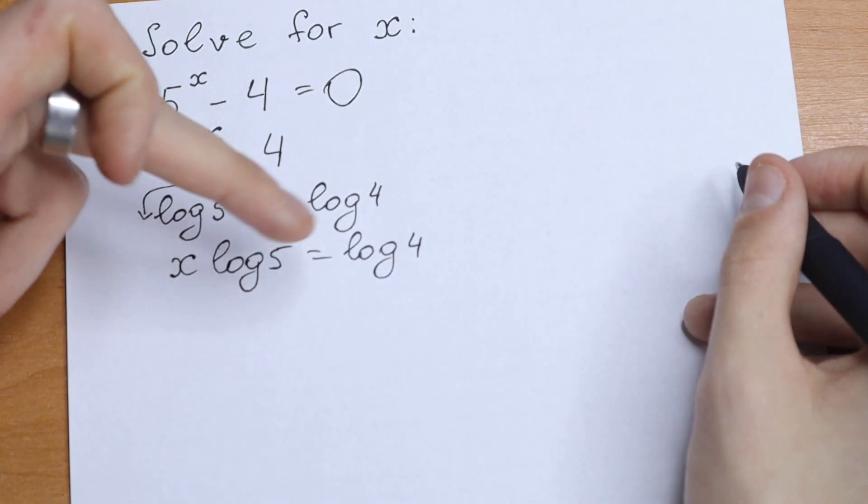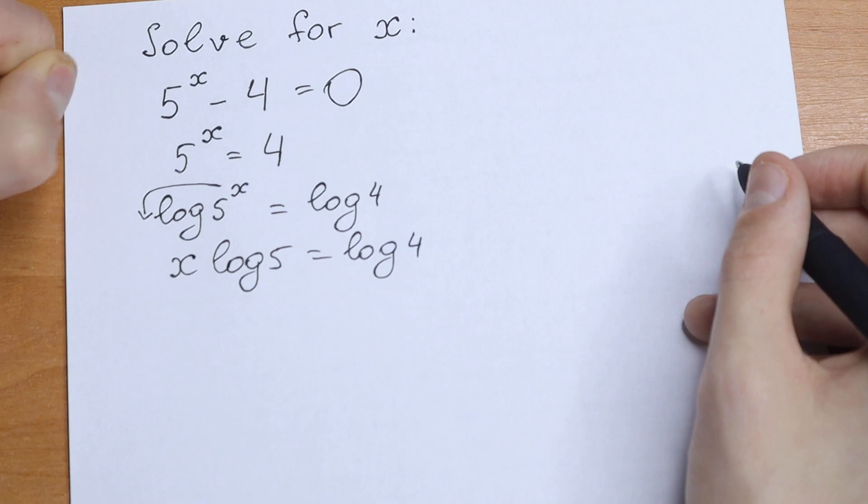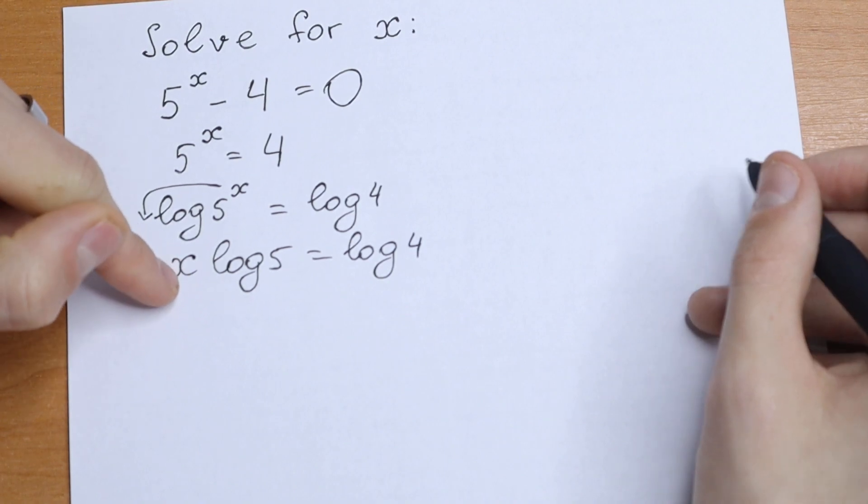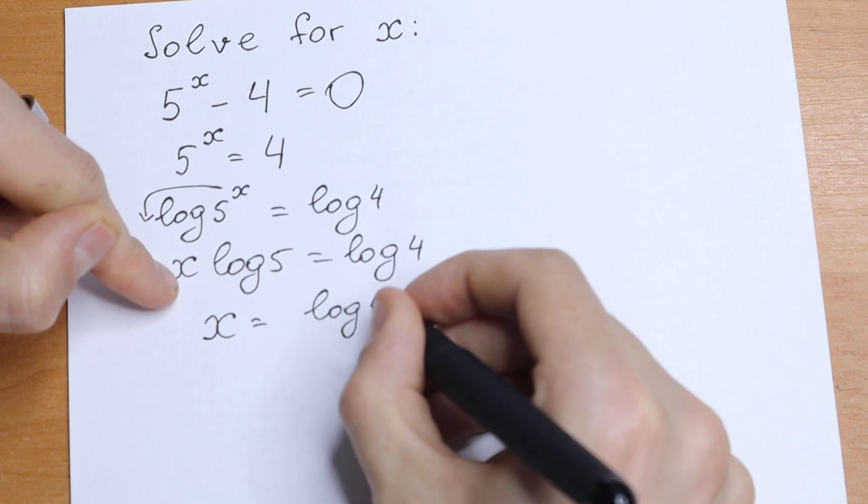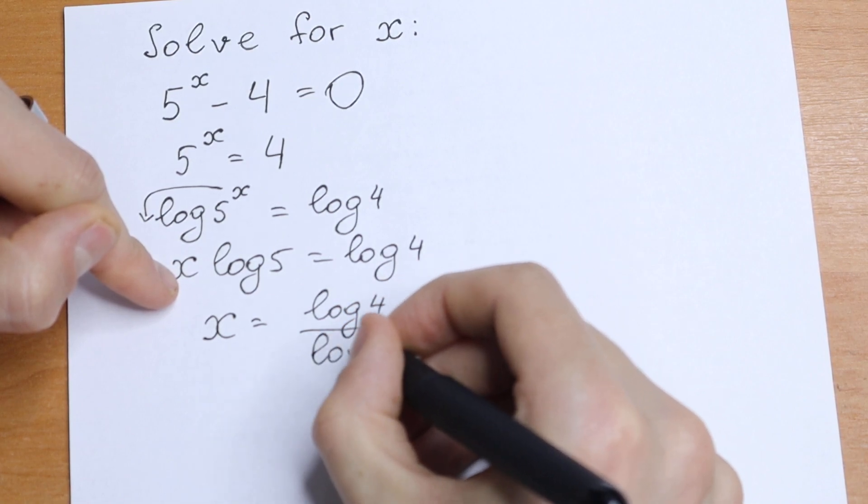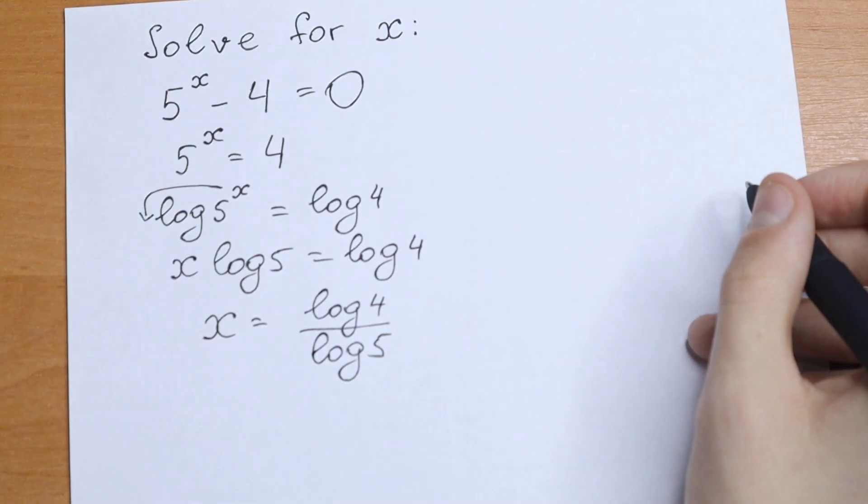So take a look, if we divide both sides by log 5, what will we have? We will have our answer that x equals log 4 divided by log 5. So this will be our answer.